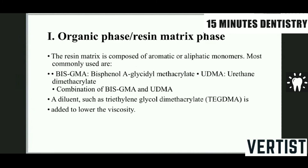When you talk about the organic phase — that is the resin matrix, the base of composite resin — it is mainly made up of BisGMA and UDMA. There are also some combinations of BisGMA and UDMA. In recent composite resins, TEGDMA (triglyceride dimethacrylate) is also added to lower the viscosity and increase the flow of the material.